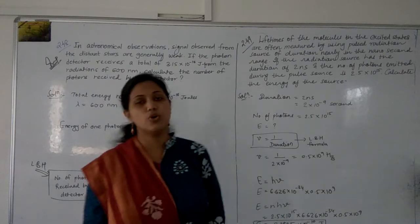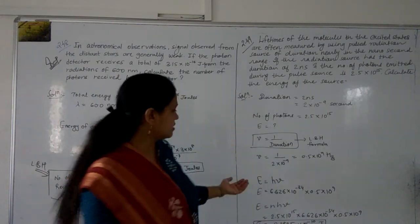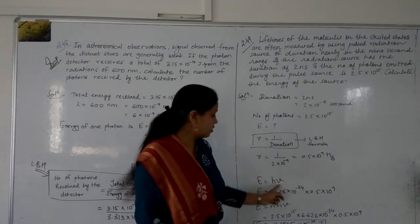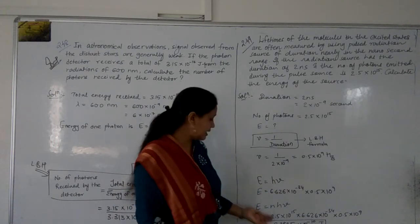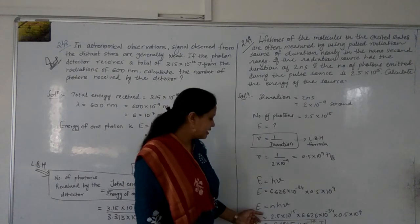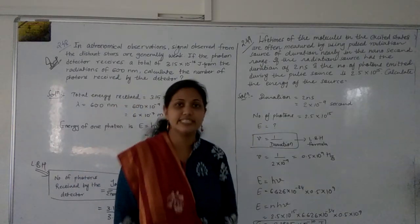You know from Einstein's theory, Planck's constant, so E is equal to hν, so 6.6 into 10 to the minus 34 into 0.5 into 10^9. This is equal to Nhν because you have number of photons already given.